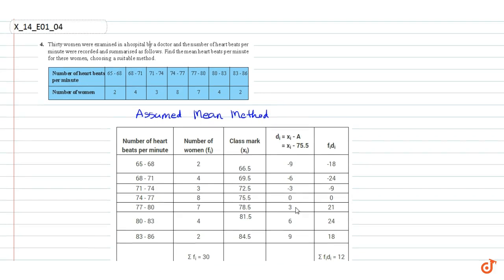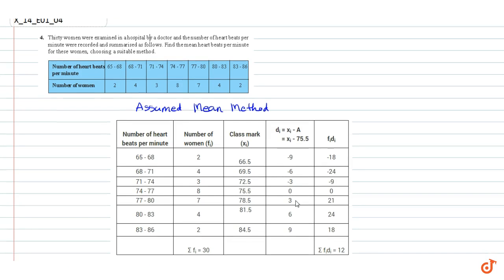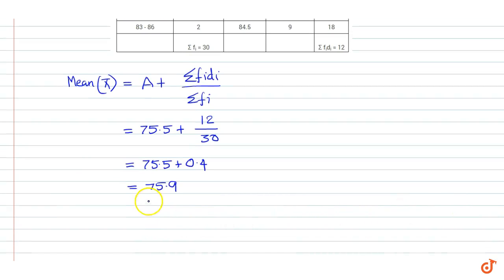So the mean heartbeats per minute for the women given in the data is 75.9. That is our answer.